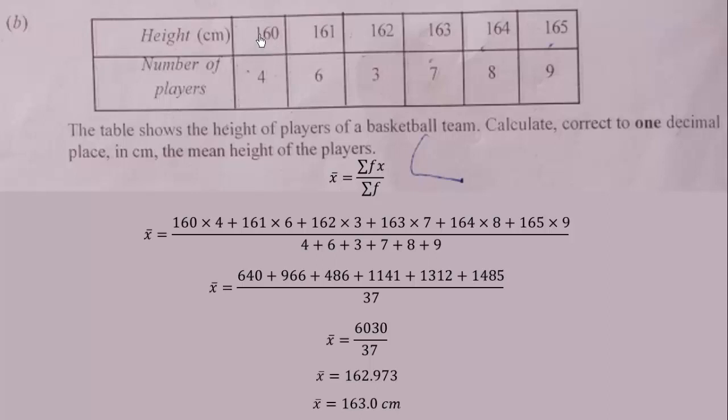That is the height. We multiply this by this, this by that, and so on. This gives us the summation of FX. We add all the frequencies: 4 plus 6 plus 3 plus 7 plus 8 plus 9, and that will give us 6030 over 37. So in decimals to three decimal places, but we are asked to correct the result to one decimal place, and that will give us 163.0 centimeters.